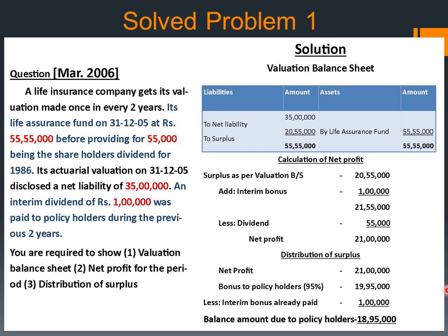Distribution of surplus: Net profit available for distribution is Rs 21,00,000. As per the LIC Act, 95% of the net profit should be distributed as bonus to policyholders. So, 95% of Rs 21,00,000 is Rs 19,95,000. Less interim bonus already paid — that is Rs 1,00,000. So the balance amount now due to policyholders is Rs 18,95,000.